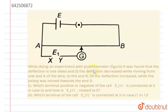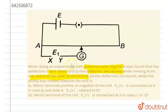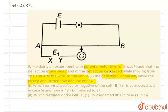While doing an experiment with a potentiometer, it was found that the deflection is one-sided. In the first case, the deflection decreased while moving from end A of the wire to end R. In the second case, the deflection increased while the jockey was moved towards end D. So these are two different cases.